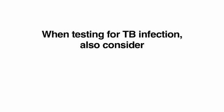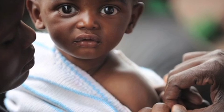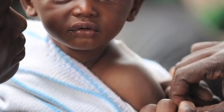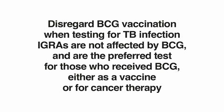When testing for TB infection, also consider the BCG vaccine, HIV infection, and the booster effect. The BCG vaccine is currently given in many parts of the world where TB is common; it's used to protect infants and young children from serious complications of TB disease. The vaccine isn't given in the U.S. Disregard BCG vaccination when testing for TB infection. IGRAs are not affected by BCG and are the preferred test for those who received BCG, either as a vaccine or for cancer therapy.